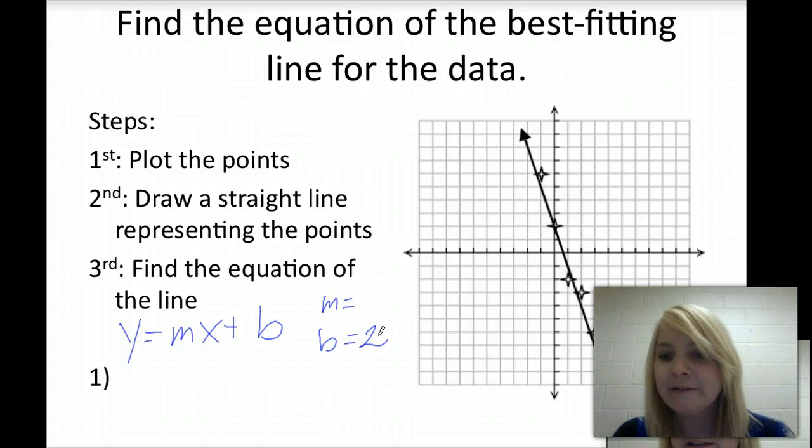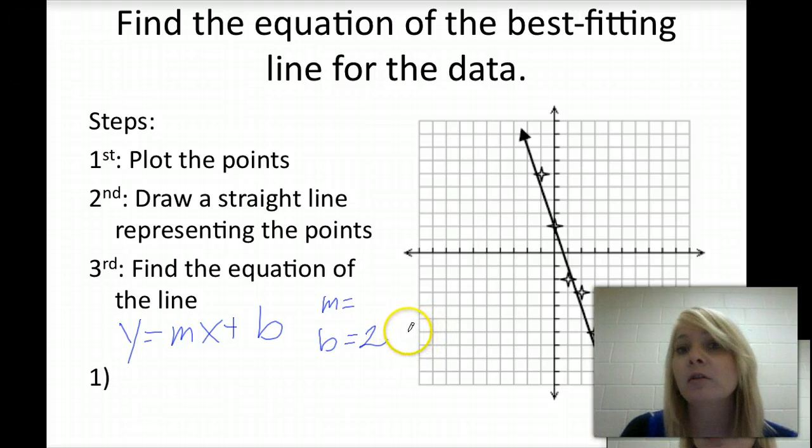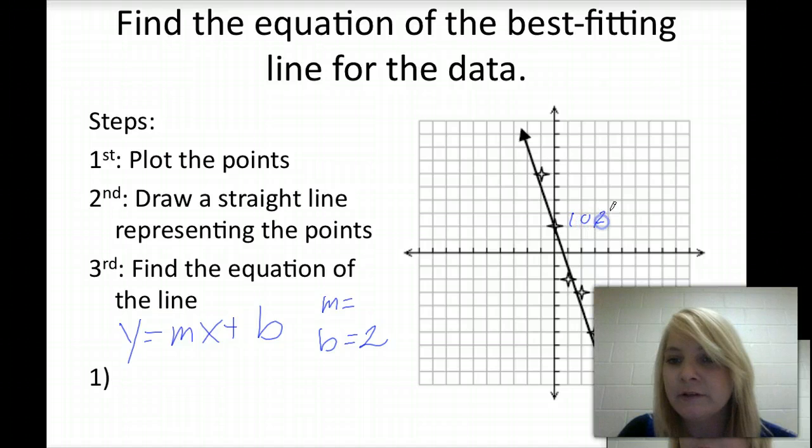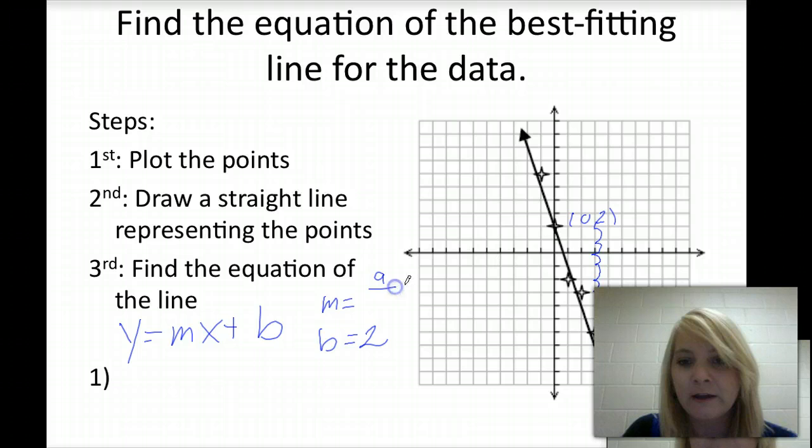And then when you're finding slope, you're going to be using the same method that we looked at in class, where you're going to find two points on your line that cross at the grid points. So I'm going to use this ordered pair, which is 3, negative 7. And then I'm going to use my y-intercept of 0, 2. So I go up 9 units. So I rise 9, and then I run 1, 2, 3. And since I'm going to the left, that will be negative 3. Now this simplifies down to negative 3, so my slope is negative 3. So the equation of that line is y equals negative 3x plus 2.